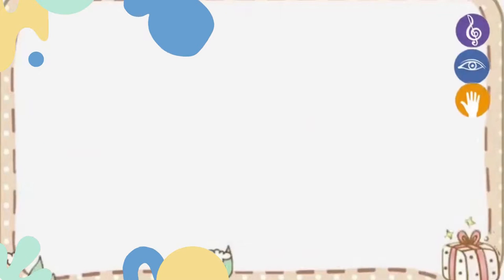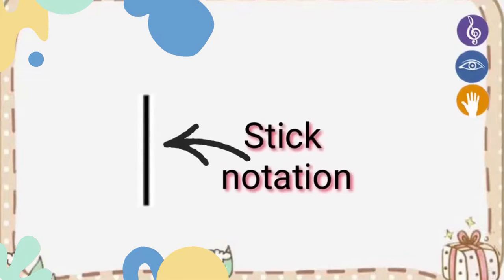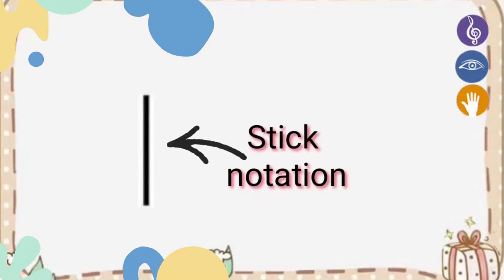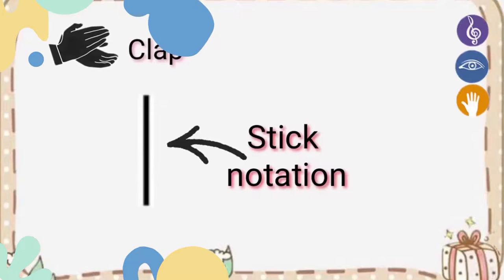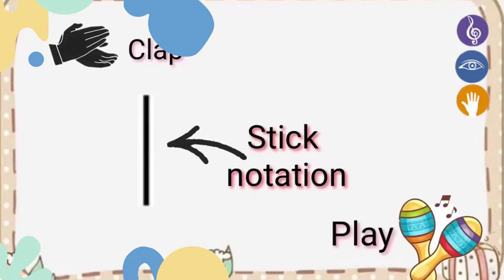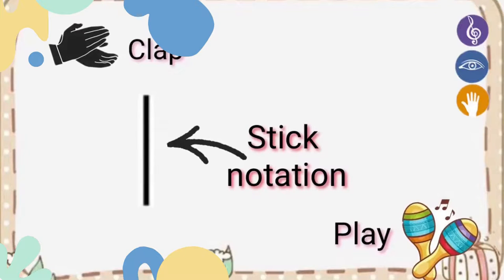There's a symbol that we use in steady beat, and it looks like this. It is called Stick Notation. Now try to clap your hands or play your maracas whenever you see the stick notation, as we sing the song Mango Tree.